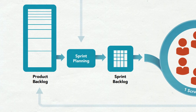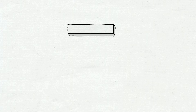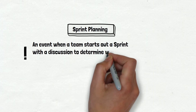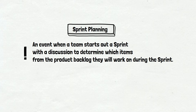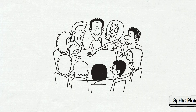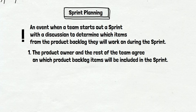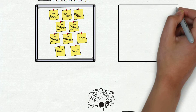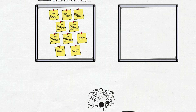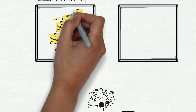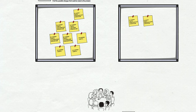Now we can move to the first item of the sprint: sprint planning. Sprint planning is an event when a team starts a sprint with a discussion to determine which items from the product backlog they will work on during the sprint. Basically, it is a meeting where people discuss two main topics. First, the product owner and the rest of the team agree on which product backlog items will be included in the sprint. The team selects items from the product backlog they plan to develop and deliver in the next sprint — mostly two weeks' work. In our case, the team selected three items: two stories and one small bug fix from the previous sprint.